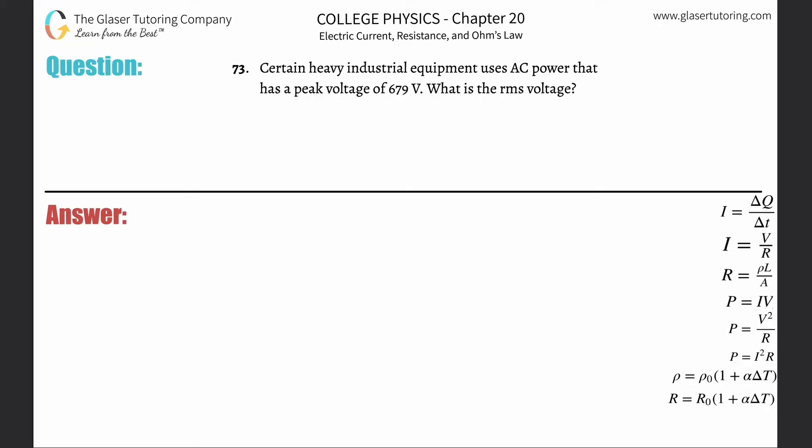Number 73. Certain heavy industrial equipment uses alternating current power that has a peak voltage of 679 volts. What is the root mean square voltage, or RMS voltage?